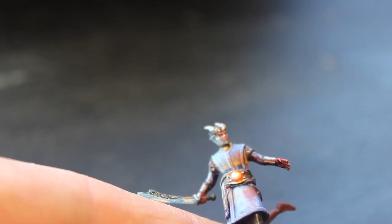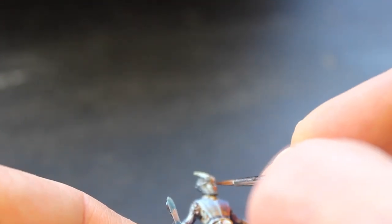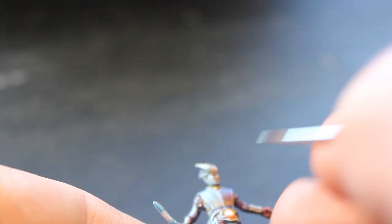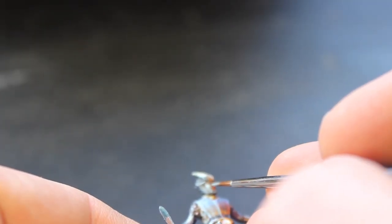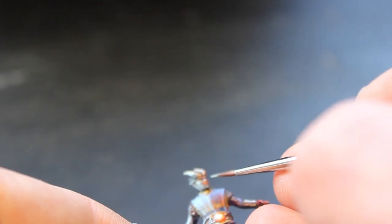The eyes should also reflect those light sources, the orb and the sword. So add little spots of orange for the orb and blue for the sword.